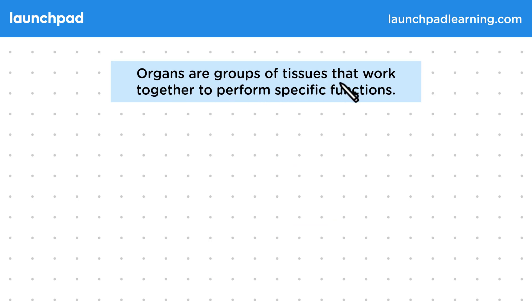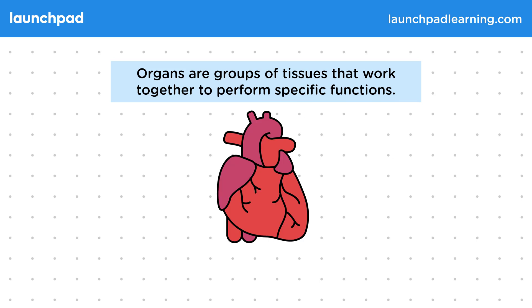Organs are groups of tissues that work together to perform specific functions. The heart is an example of an organ that's made up from a group of different tissues that work together to pump blood around the body.